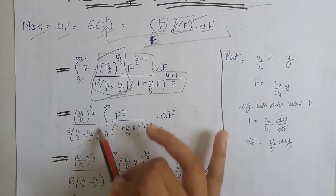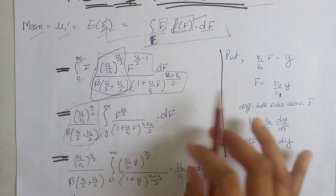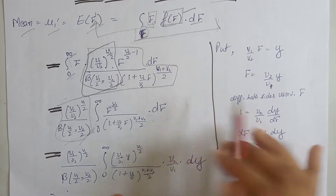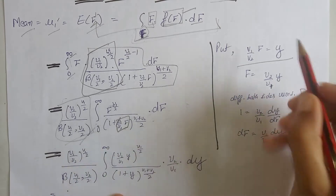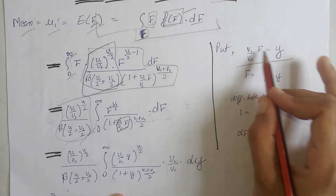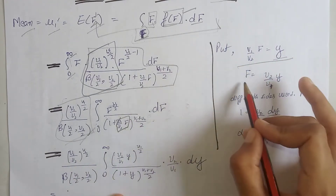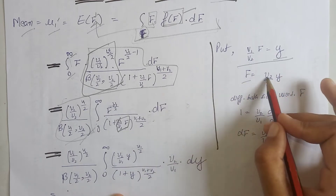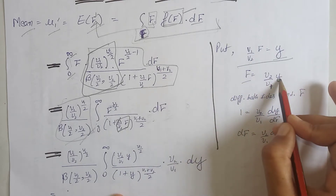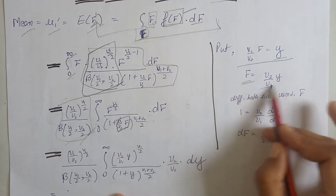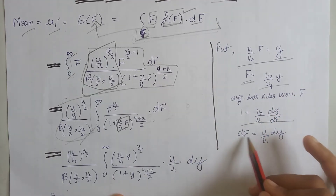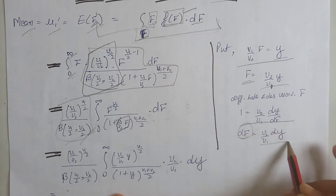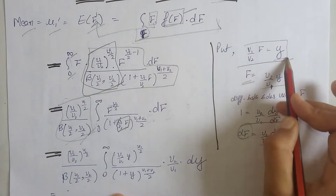We use the substitution: at the place of this whole term we write only y, meaning ν₁ divided by ν₂ times F equals y. From here we get F equals ν₂ divided by ν₁ times y. Differentiating both sides with respect to F, we get the value of dF in terms of dy.